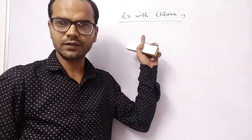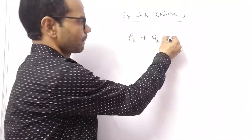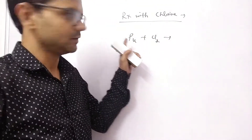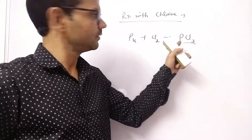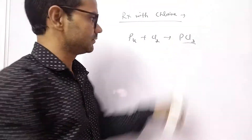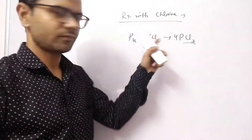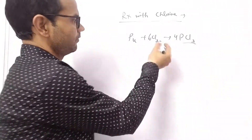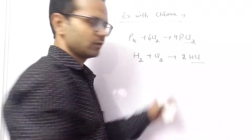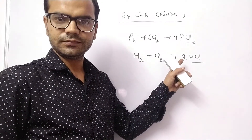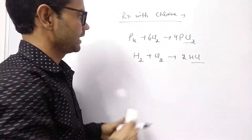Next is the reaction with chlorine. Non-metals react with chlorine to form their respective chlorides. For example, phosphorus reacts with chlorine to form phosphorus chloride. When hydrogen reacts with chlorine, hydrochloric acid is produced.